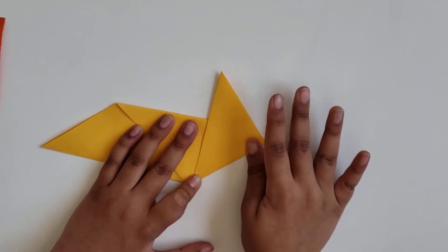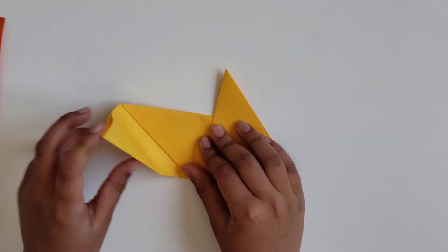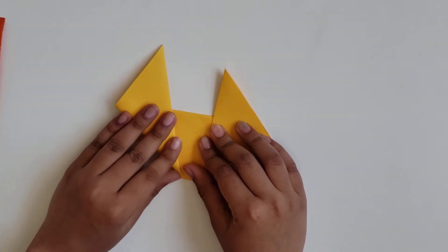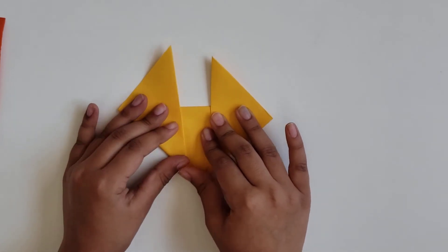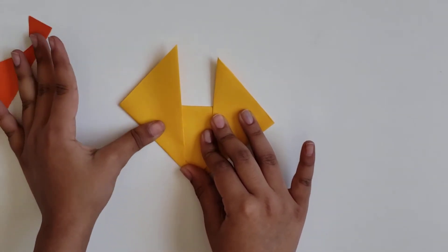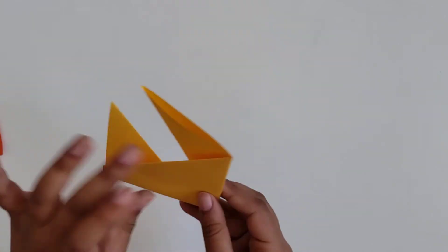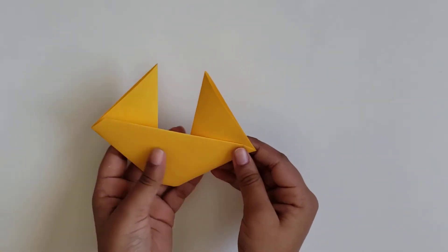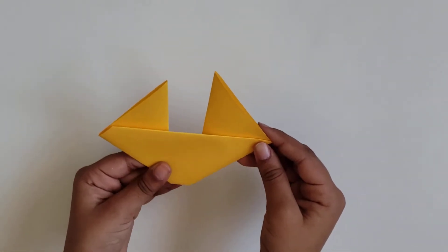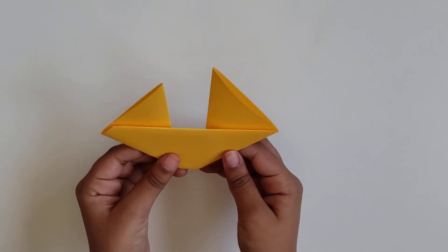You can fold it like this and then do it on the other side. And now, if you flip your paper around, you see that your fox face is coming out.